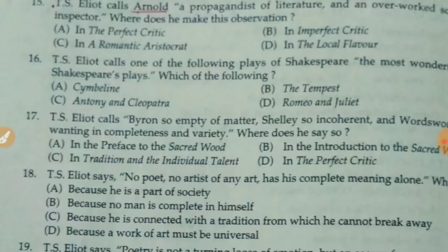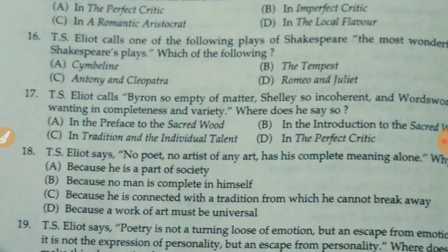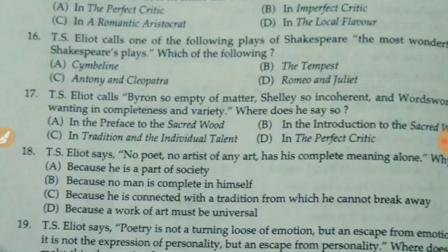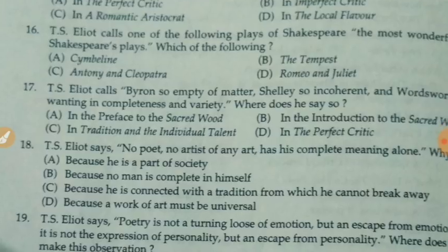T.S. Eliot says no poet, no artist of any art, has his complete meaning alone. The answer is C — because he is connected with tradition. If you don't know what 'Tradition and Individual Talent' tells you, check out my video. T.S. Eliot says poetry is not a turning loose of emotion but an escape from emotion; it is not the expression of personality but an escape from personality. The answer is C — in 'Tradition and Individual Talent.'